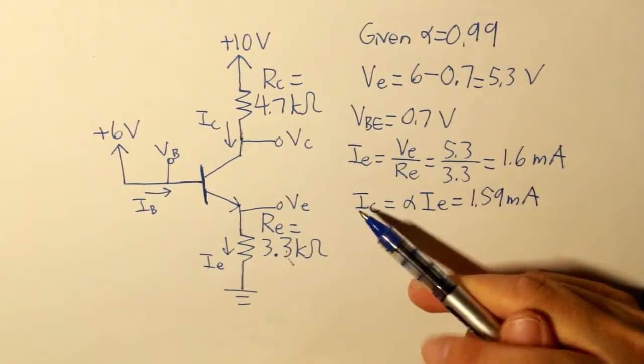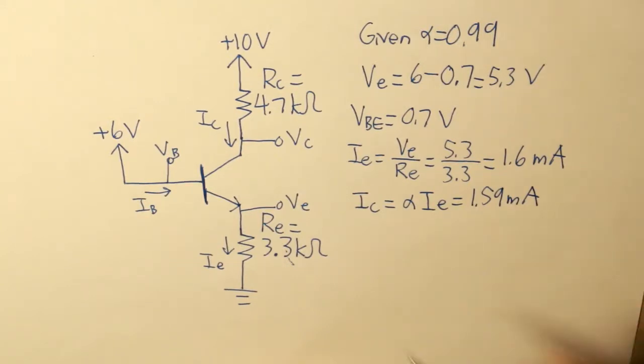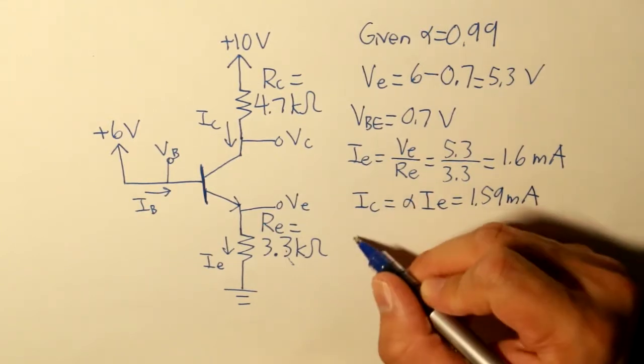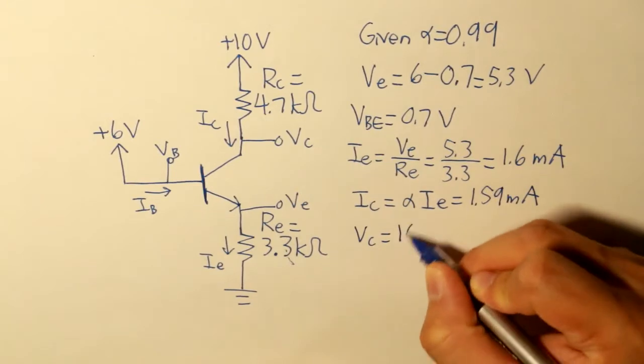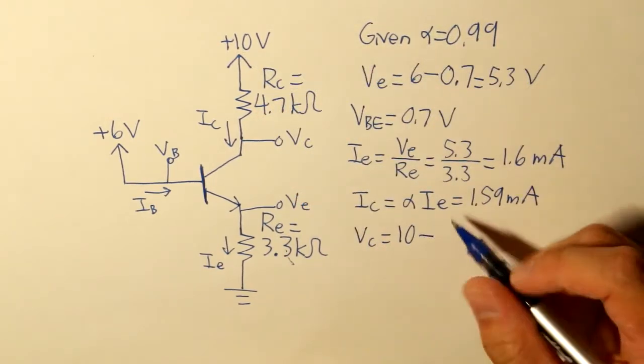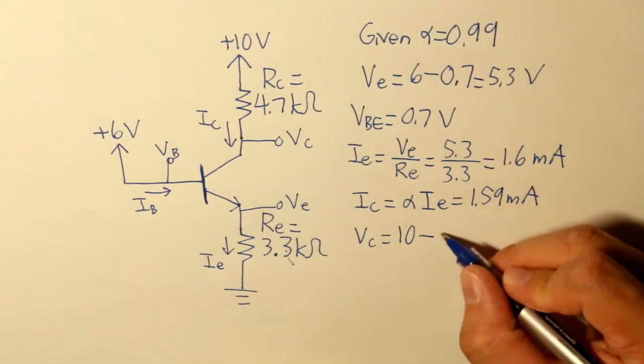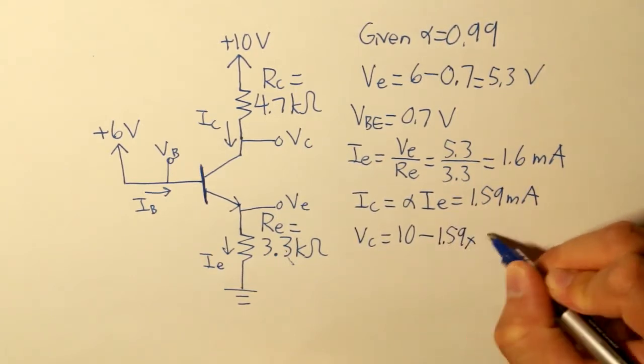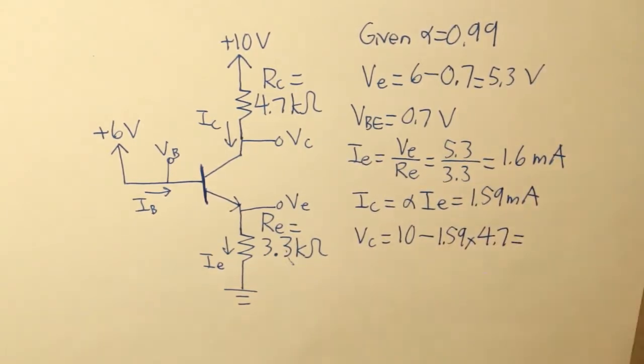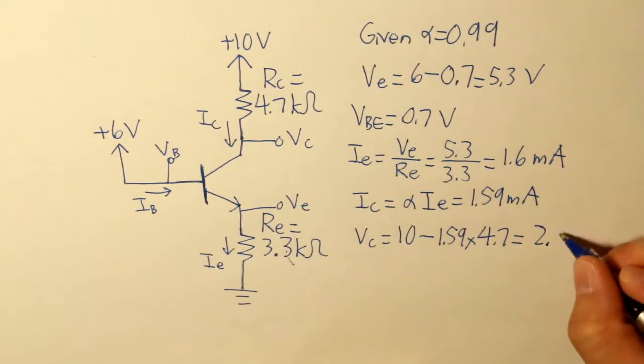Now given the collector current, we can find what VC is. VC is equal to 10 subtracted by the current crossing through this collector resistance. And that is 1.59 multiplied by 4.7, and what we get is 2.53 volts.